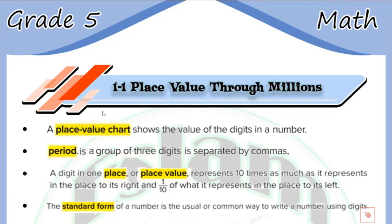When we talk about place value, it means we are talking about ones, tens, hundreds, thousands, ten thousands, hundred thousands, and so on.